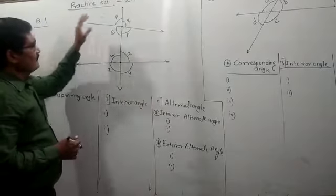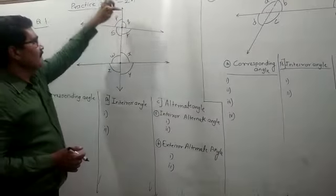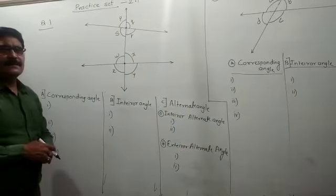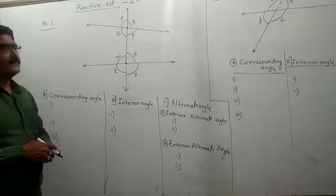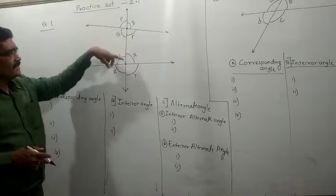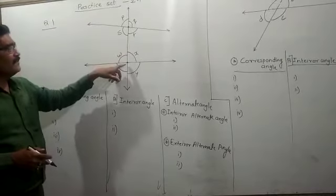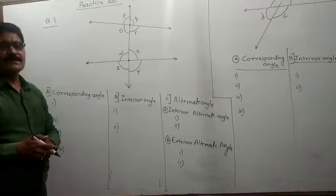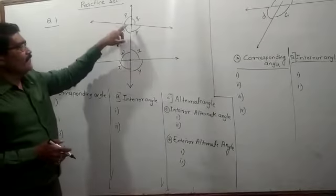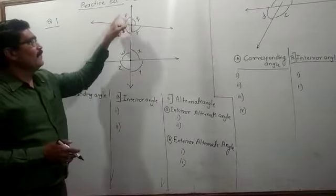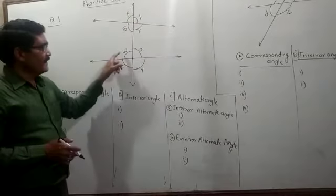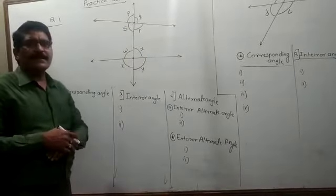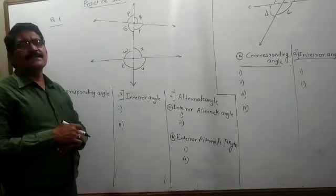This is one line, this is another line, and this one is the transversal. Due to the transversal, different types of angles will form. This transversal intersects these two lines in two distinct points. Due to the intersection, at one vertex four angles will form — one, two, three, four — and another four angles will form at the other vertex. Total eight angles will form at each vertex.